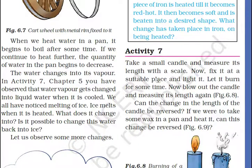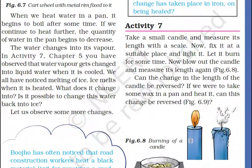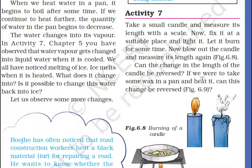Activity 7: Take a small candle and measure its length with a scale — note how many centimetres long it is. Now fix it in a suitable place and light it. Let it burn for some time. Then blow out the candle and measure its length again. Can the change in the length of the candle be reversed?